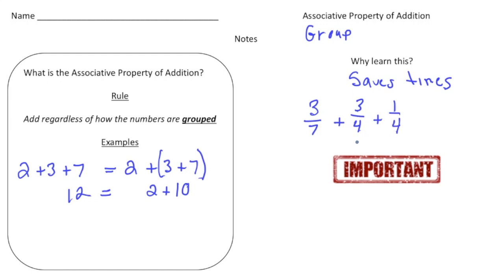I want to add these three fractions. I could do three-sevenths plus three-fourths by getting common denominators, rewriting the fractions, and adding them — and according to order of operations that's what I'd have to do. But notice three-fourths and one-fourth already adds up to one. So I'm going to add parentheses around three-fourths and one-fourth, add those to get one, and then one plus three-sevenths gives us one and three-sevenths as our answer.